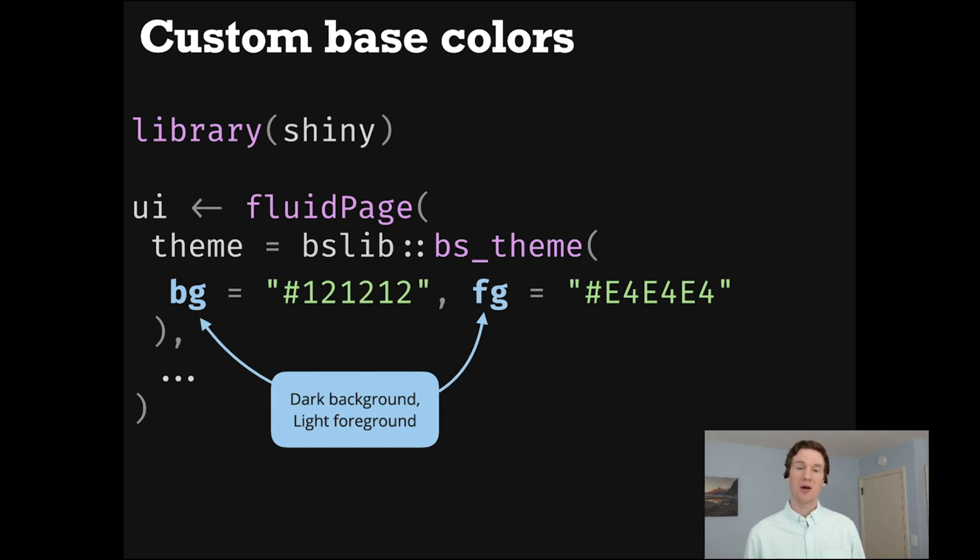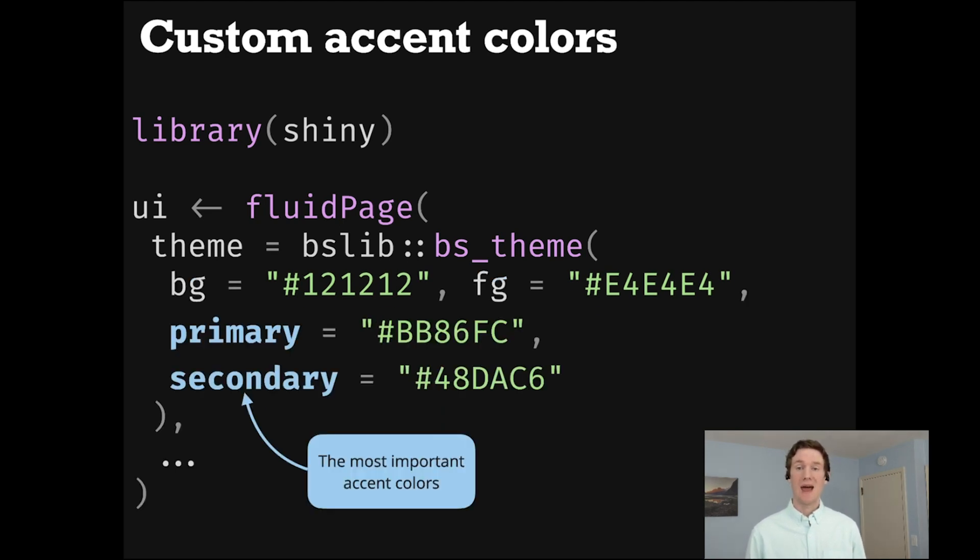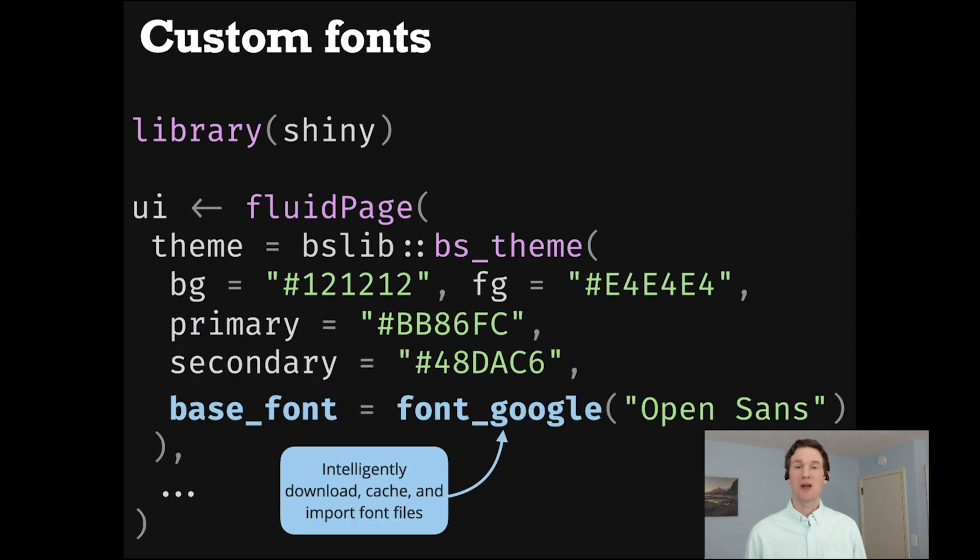So here I've set the background and foreground colors to a dark mode for my application. And then next I could choose to set some important accent colors like the primary or secondary color. And finally, I will set a different base font from the Bootstrap defaults. So here I'm going to use the font_google function, which does a lot of work for me in terms of making sure that the font files are available for the end user, even if they don't have an internet connection.